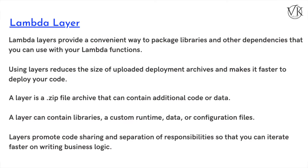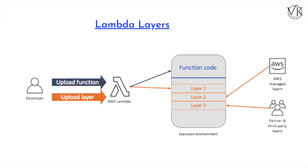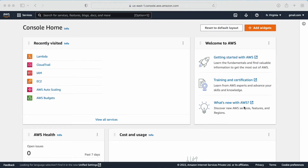Let's suppose there is an external dependency and you are creating 10 Lambda functions where you need to include that dependency in all 10 functions. That is not feasible to include those external dependencies every time in the code. So what we can do is, whatever external library or dependency we have, we can package it into a folder, upload it into the Lambda layer, and while running our code, give the reference of that layer. With this, our code is going to be small, and wherever we need that external dependency, we can include it very easily.